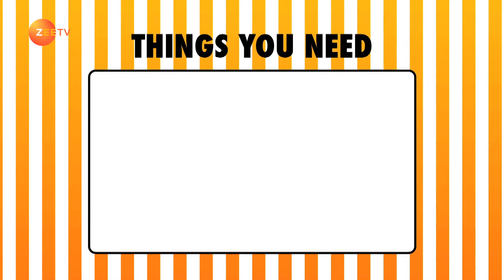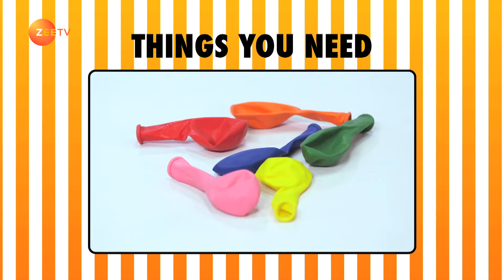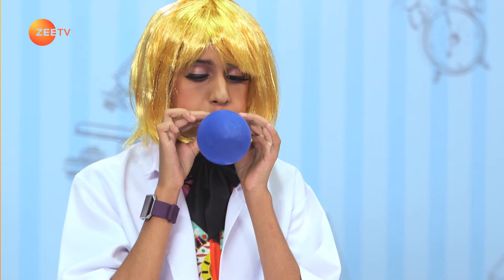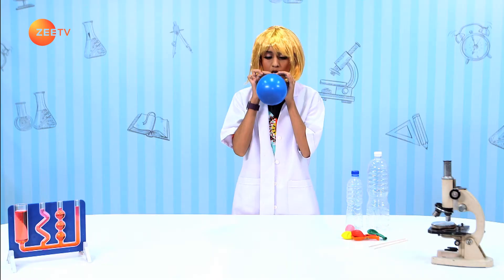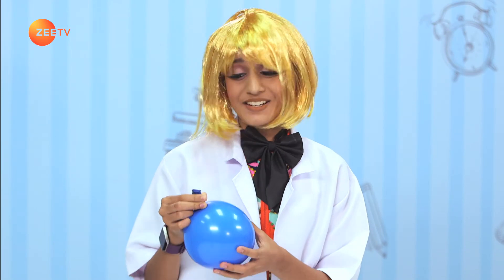How does air pressure work? It's time for us to find out now. Things we need: one medium-sized plastic bottle, one large-sized plastic bottle, two balloons, and a stick. First, take a balloon and blow into it. Did you see the balloon expanding? That's inside!